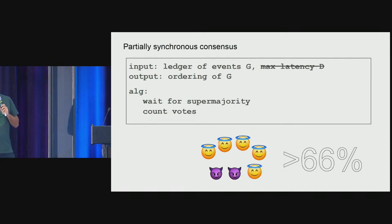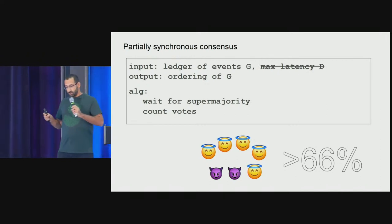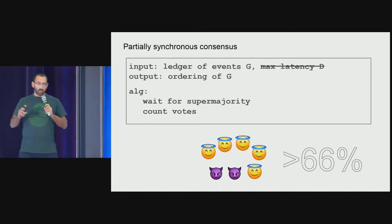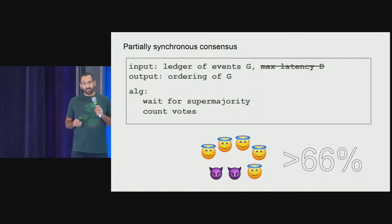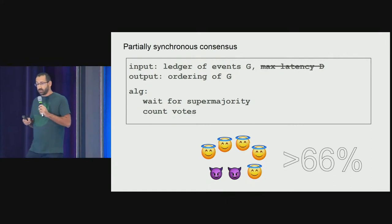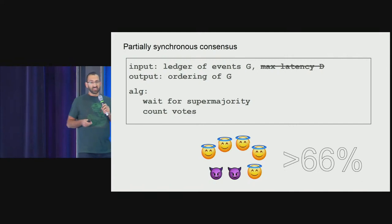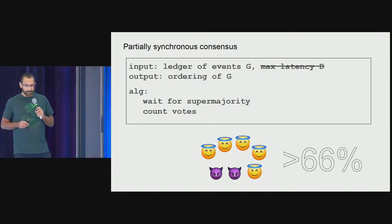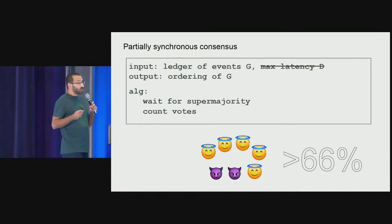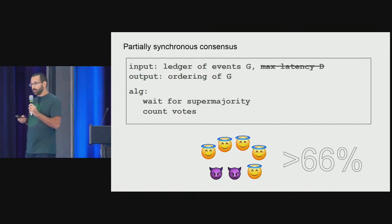In partially synchronous protocols, the protocol is not allowed to know anything about the delay — no 10 minutes, no five or six seconds as in Ethereum. It's a well-known result that in that case you can only achieve 67% or 34% resiliency to Byzantine attackers. So any attacker with a third or more of the hash rate can attack the system. With these two results, it does seem that we set out to solve an impossible challenge.